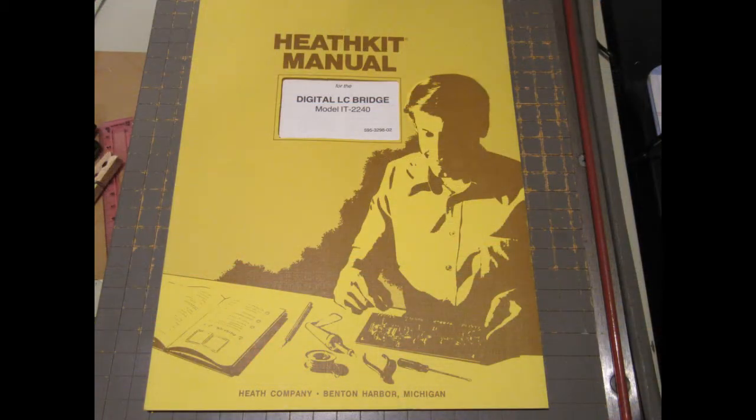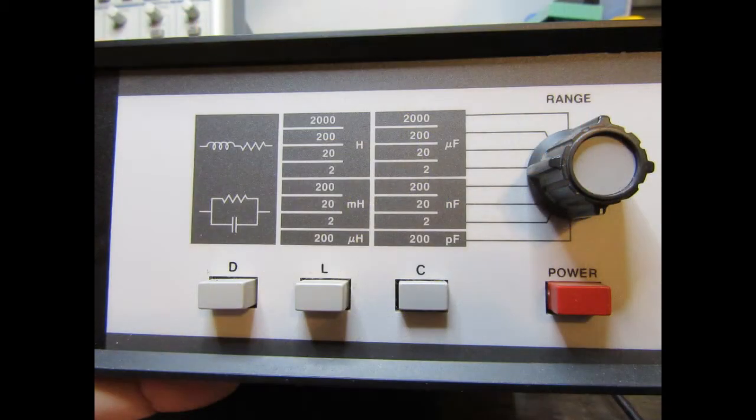The Heathkit Model IT2240 allows easy measurement of capacitance and inductance, as well as the associated loss or dissipation factor of the components under test. The meter measures capacitance in the range of 1 picofarad to 2,000 microfarads, and inductance in the range of 1 microhenry to 2,000 henrys, over an eight-decade range. Accuracy is plus or minus 0.5%, except for the lowest range where it is plus or minus 0.1 picofarad or 0.1 microhenry.